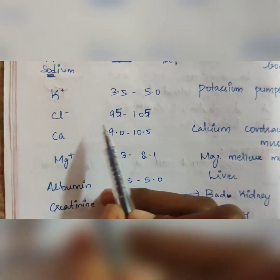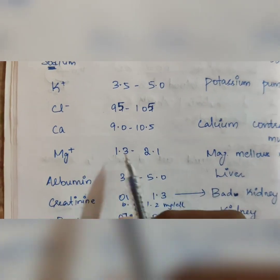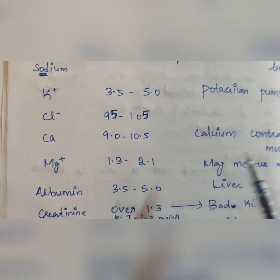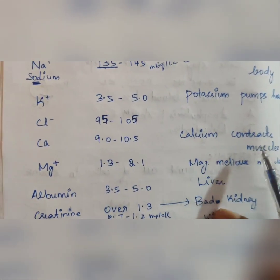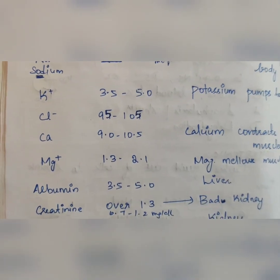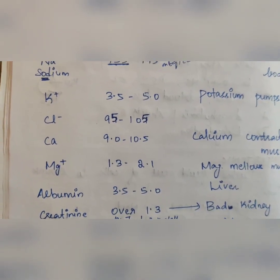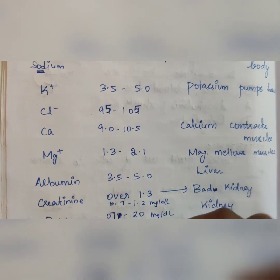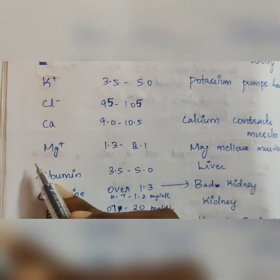Next, chloride 95 to 105. Calcium 9.0 to 10.5. And calcium controls muscles, contraction and relaxation.